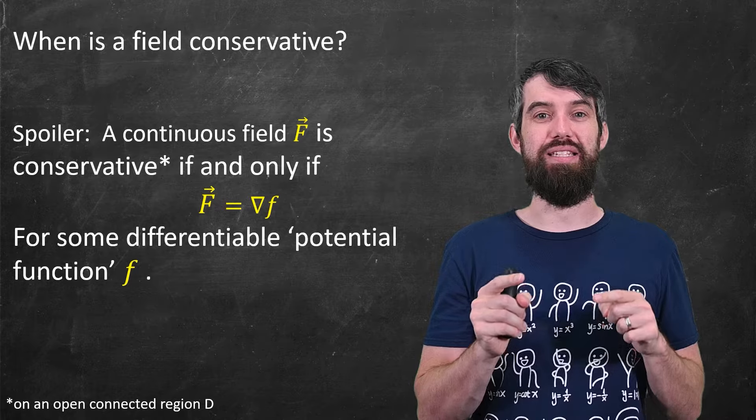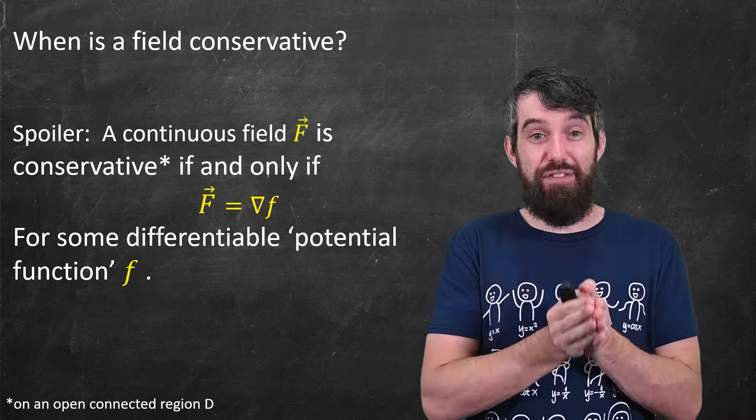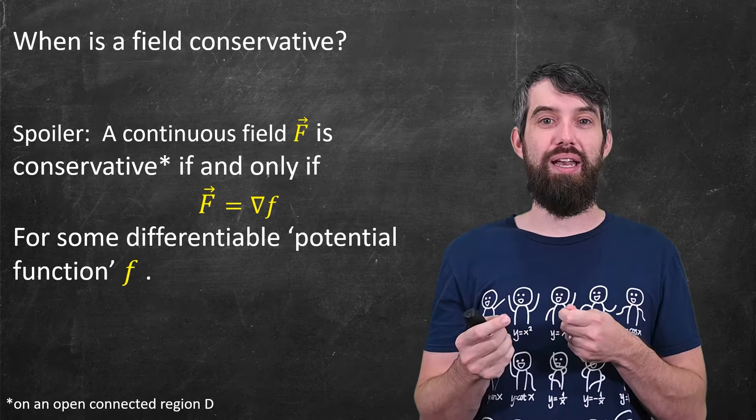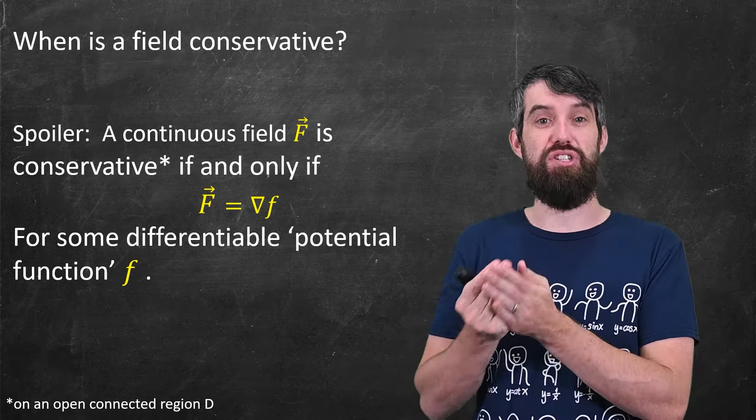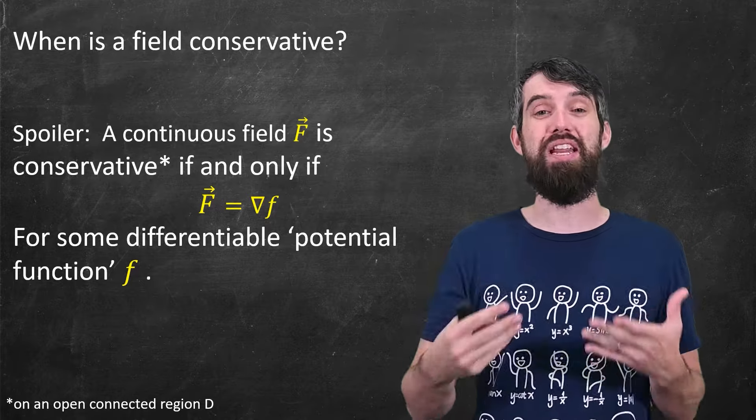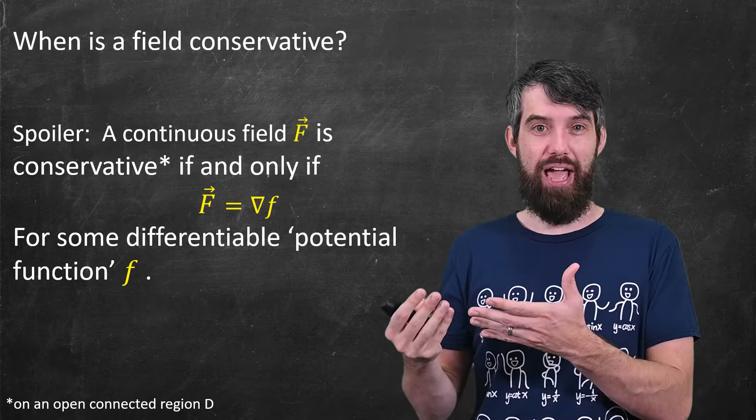The answer is that a continuous field f is conservative precisely when it can be written as the gradient of some scalar function, some potential function is the fancy terminology we often use it, the gradient of a potential function little f.